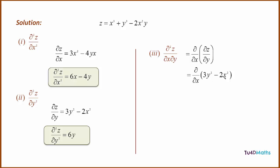To find d²z/dy·dx, we take dz/dy and differentiate with respect to x keeping y constant. Differentiating 3y squared gives 0, and differentiating minus 2x squared with respect to x gives minus 4x.